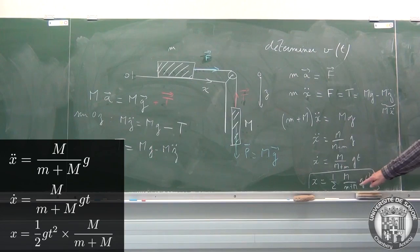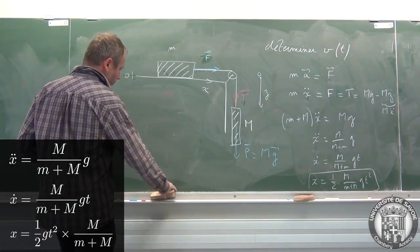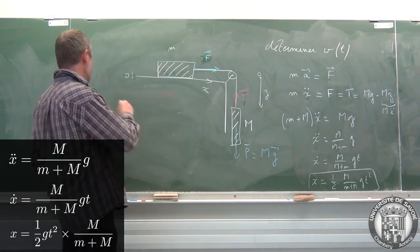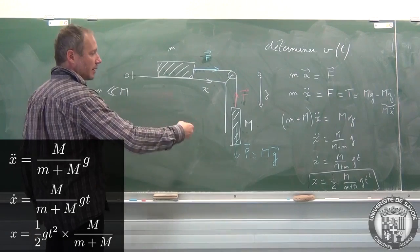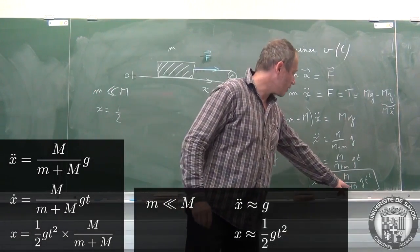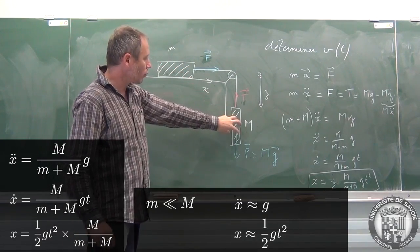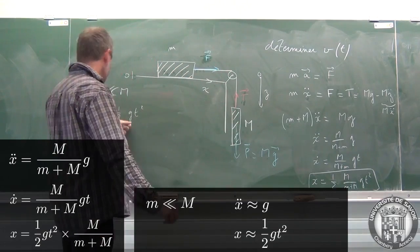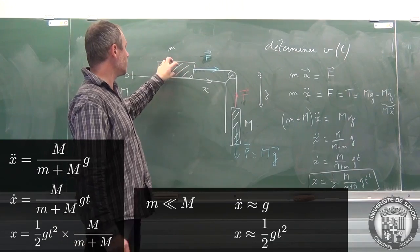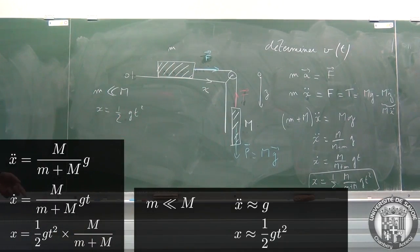Donc par rapport à tout à l'heure, on voit qu'on a un +m ici qui intervient, qui fait toute la différence. Donc ça, c'est la résolution correcte du problème. On voit d'ailleurs que, si la masse m est très petite devant M, si ça c'est un tout petit machin et ça c'est un gros truc, l'équation nous dit que x ≈ (1/2)gt². Le dénominateur fait M, ça simplifie, il reste (1/2)gt², c'est-à-dire que ce machin-là est entraîné par le contrepoids. Le contrepoids, tout se passe comme si le contrepoids tombait tout seul en chute libre, et il entraîne avec lui la masse qui est ici.